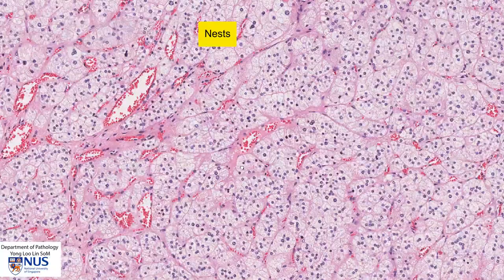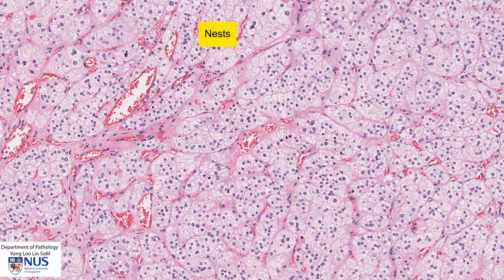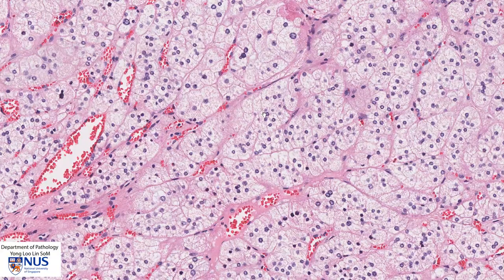The cells themselves are quite polygonal. They have rounded, relatively uniform nuclei of variable sizes — some larger, some smaller — and they do have very abundant cytoplasm, which appears quite bubbly and is again very lipid-rich. This means that grossly, these tumours are bright yellow in colour, so they are quite easily recognisable when we bisect the tumours grossly.